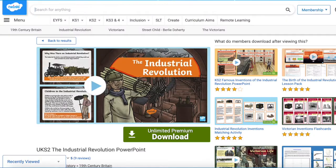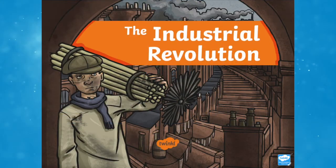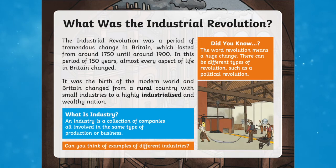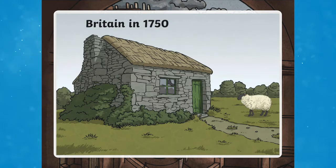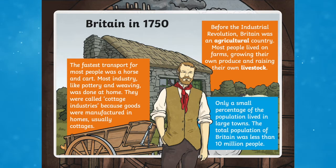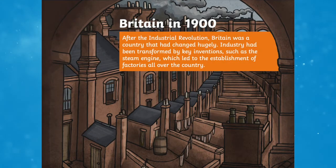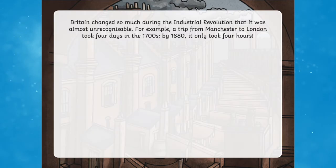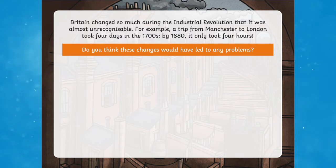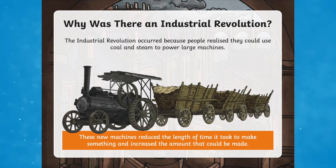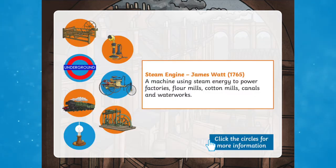Let's start by taking a look at the Upper Key Stage 2 Industrial Revolution PowerPoint. Teach your pupils about the Industrial Revolution with this fantastic presentation. It helps explain the huge changes and how they affected Britain during the Industrial Revolution, explaining the main reasons for the Industrial Revolution as well as the key inventions which inspired it. This PowerPoint will also explain the social effects on Britain's population, and is ideal as an overview for the topic, perfect to use as you begin to look at this period in history.